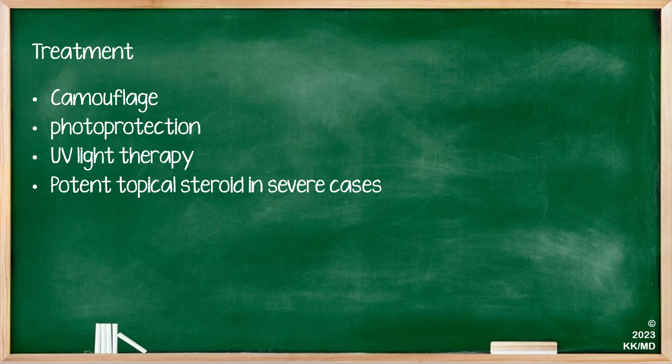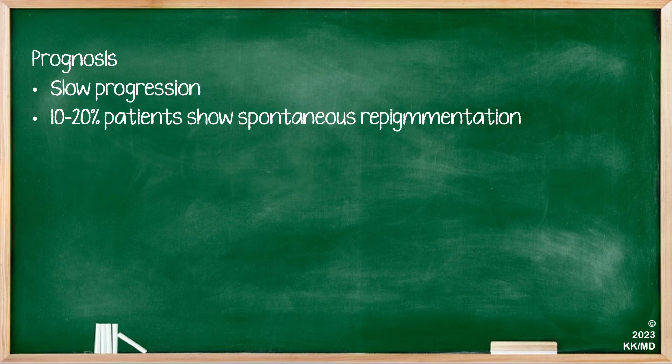With regards to treatment of vitiligo, treatment starts with conservative measures which include camouflage and photoprotection. If not responding to treatment, you could consider UV light therapy. In very rare and severe cases, and certainly under the direction of a dermatologist, you could consider potent topical steroids. Vitiligo generally has a slow progression and about 10 to 20% of patients show spontaneous repigmentation.